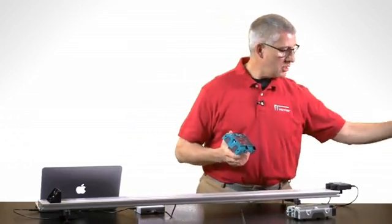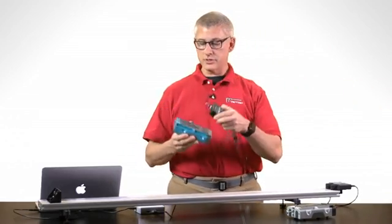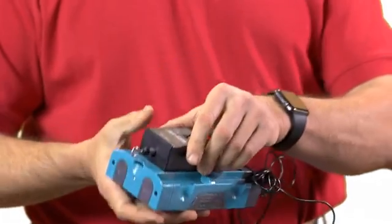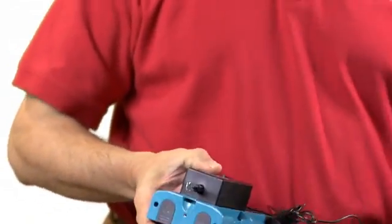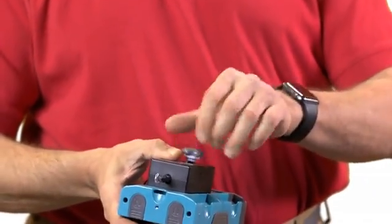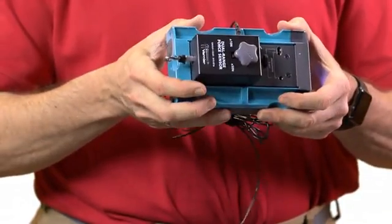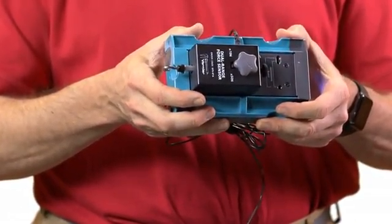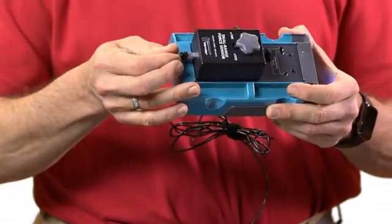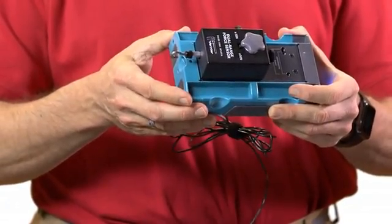For example, I can take a dual-range force sensor, it's placed on the top surface, and the supplied bolt can be driven in. And now I've attached a force sensor to the top of my cart, and it's securely in place and won't shift during the course of an experiment.